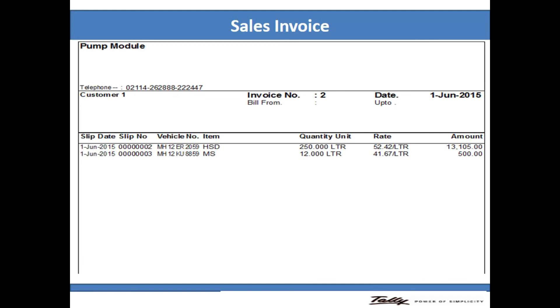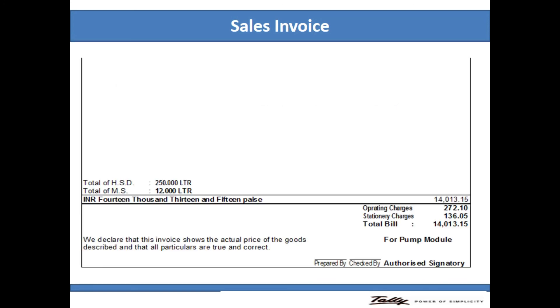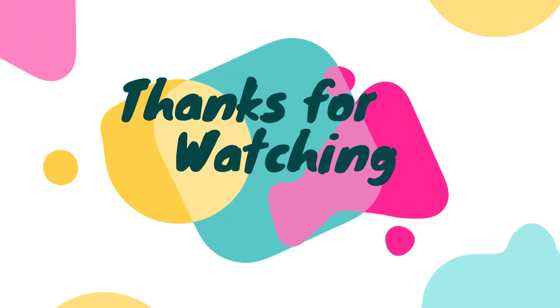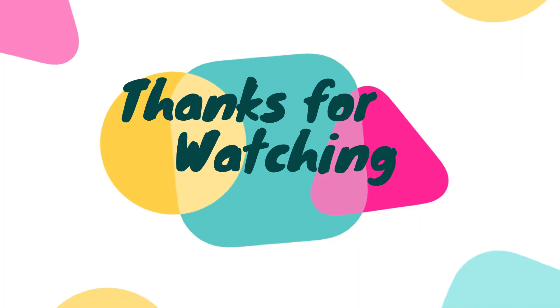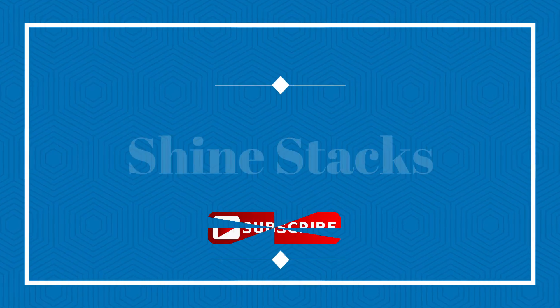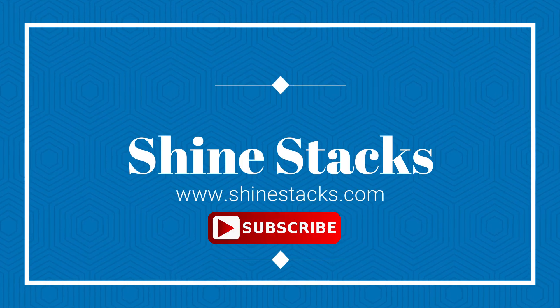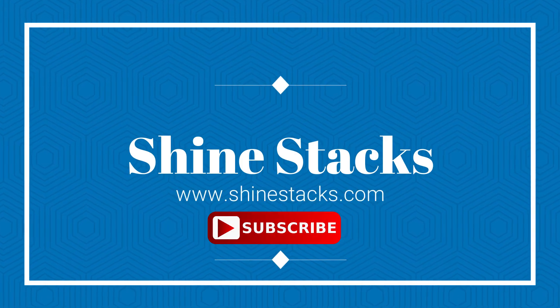The next one is the tank wise sales report, which is the most important report, with all types of charts like deep tank wise report and everything. And the next one is the sales invoice — it is a very cool looking sales invoice. This model has all types of facilities for petrol pumps. Thanks for watching, and if you have a requirement, contact me at visit4signistag.com. Have a nice day.